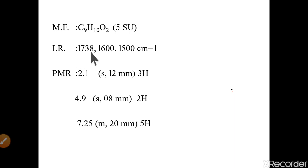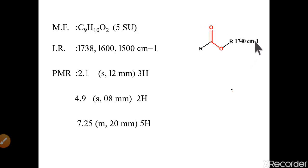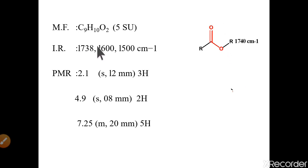Now let's look at the FTIR. We have a signal at 1738 cm⁻¹ — 1740 is a typical frequency for an ester functional group. This is also supported by the molecular formula having two oxygens, which can be utilized in forming an ester. The peaks at 1600 and 1500 are benzene ring stretching frequencies.